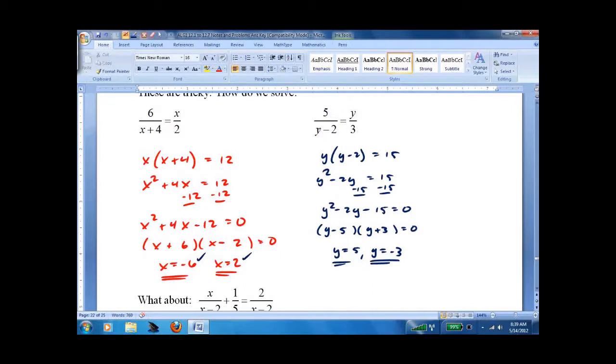5 thirds. 5 minus 2 is 3, 5 thirds. That works. Negative 3 over 3 is negative 1. Negative 3 minus 2 is negative 5. Negative 1. Works.